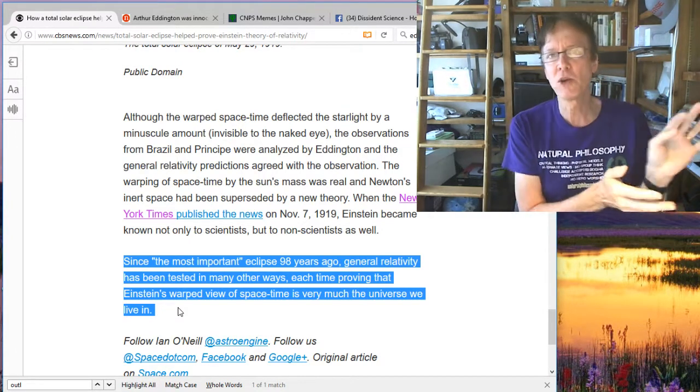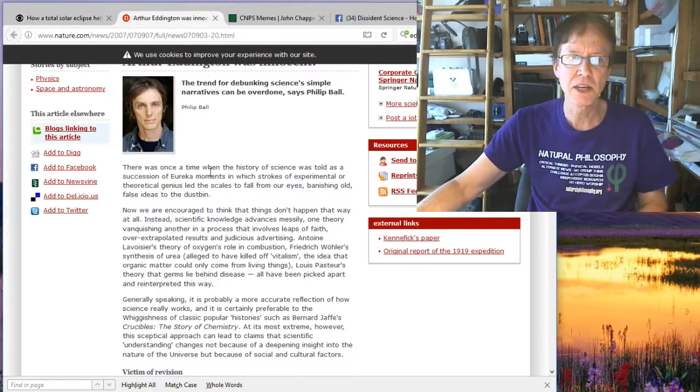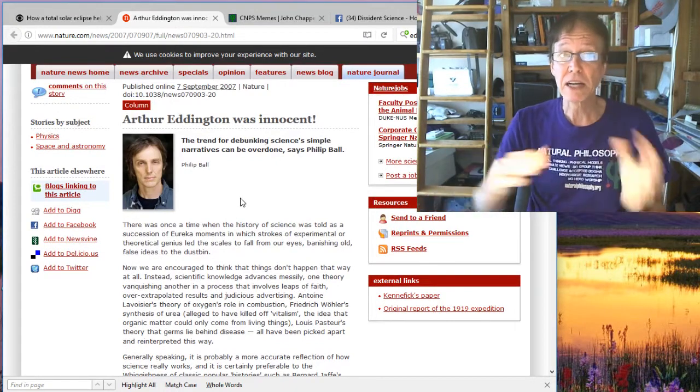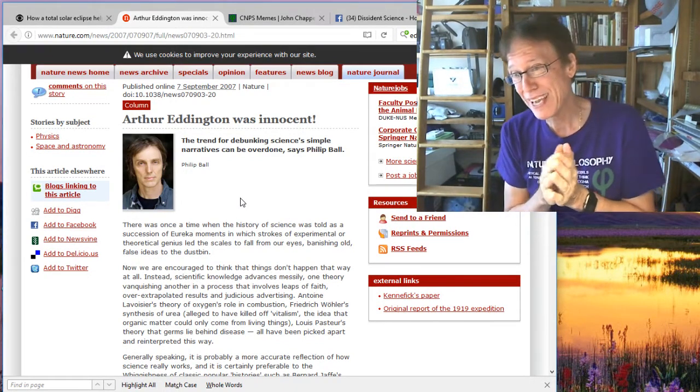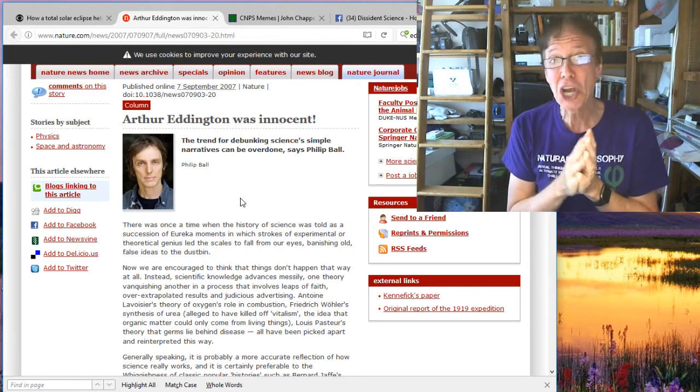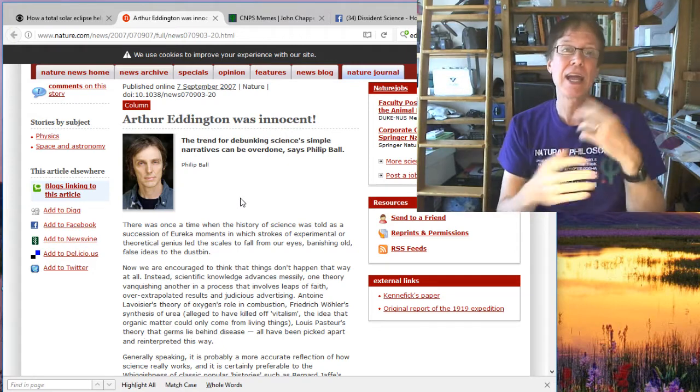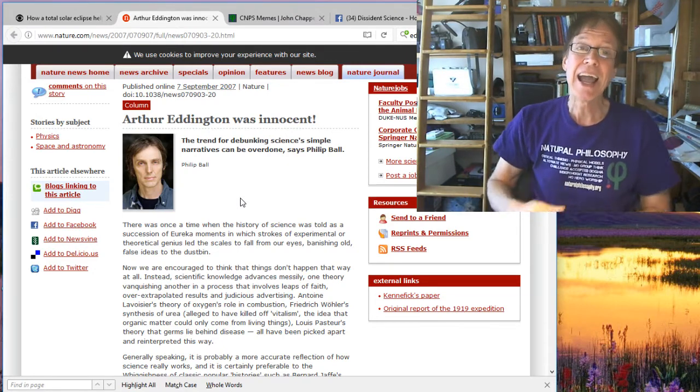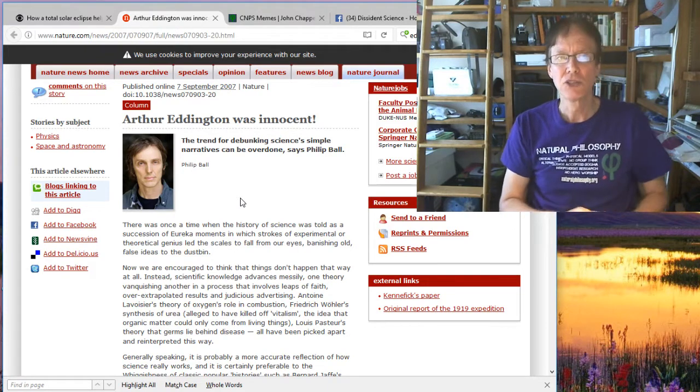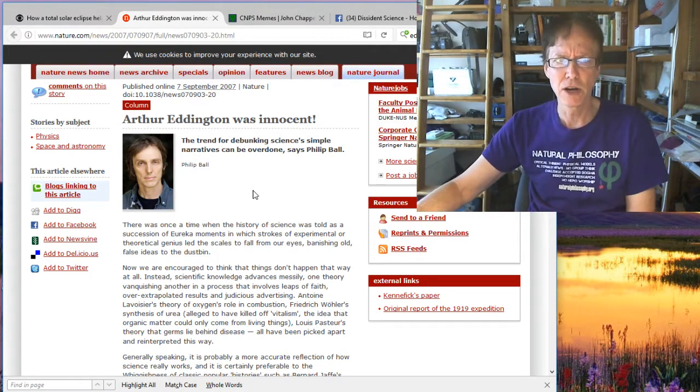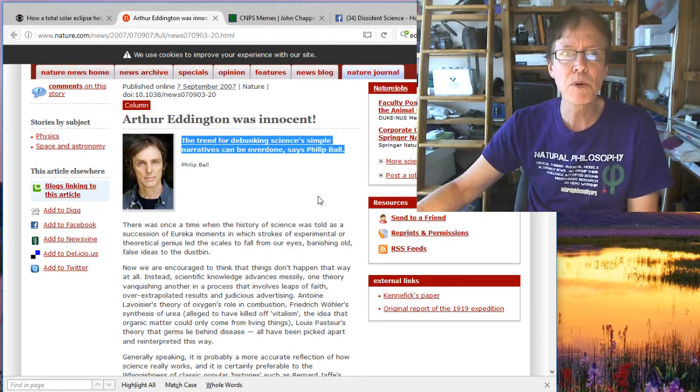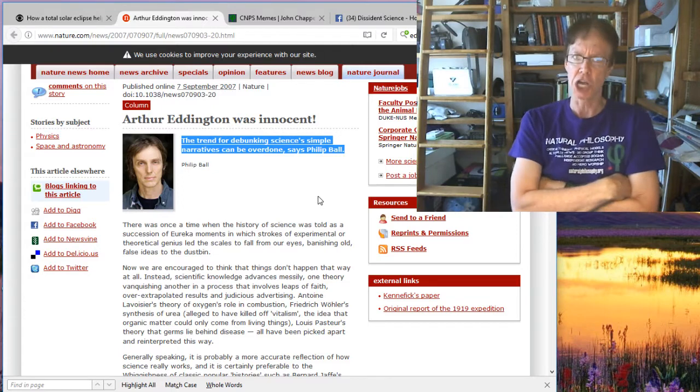So they're weaseling their way out of the actual fact that in the 1980s, we have people talking about that, in fact, in Nature was published, that we really can't rely on the data that was there. That really wasn't proof. They cherry-picked the data, they only picked certain ones. And then, of course, the moment they say that, we get this guy coming back saying, Arthur Eddington was innocent. The trend for debunking science, simple narratives can be overdone. Oh, that's so, oh, I'm so mad. It's overdone.